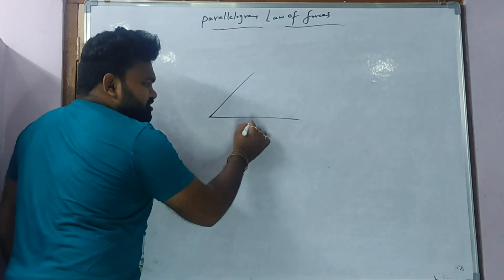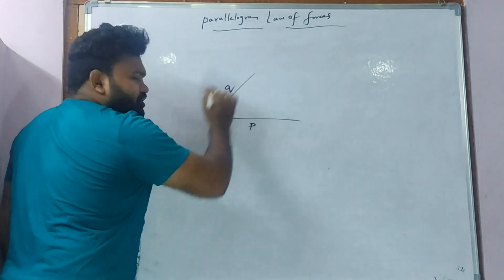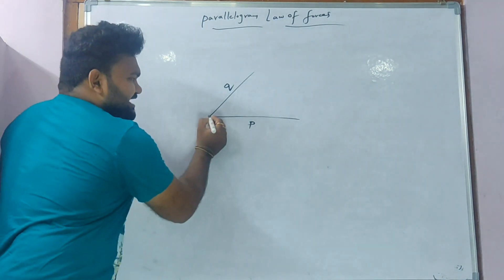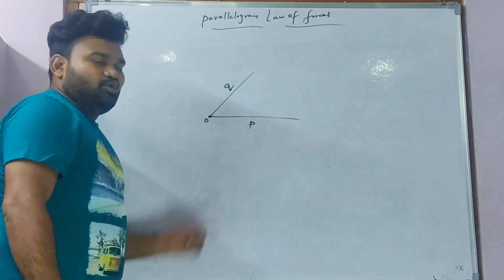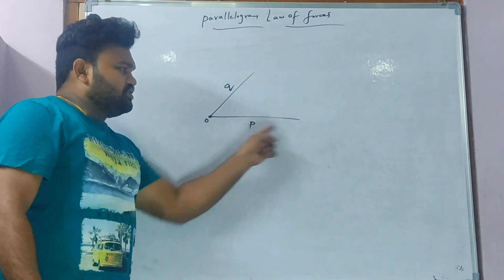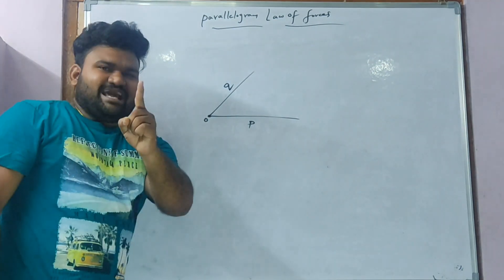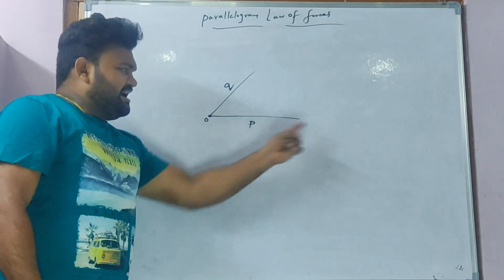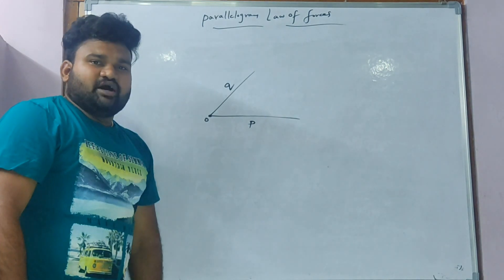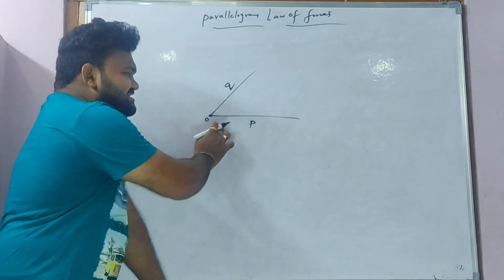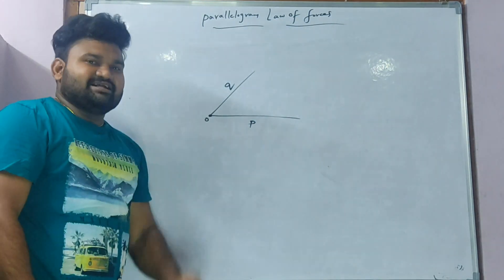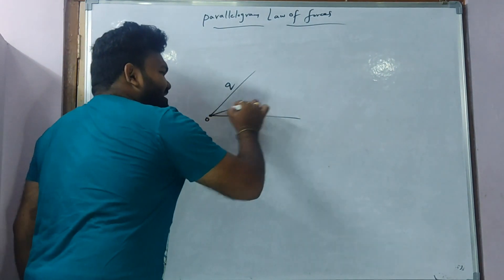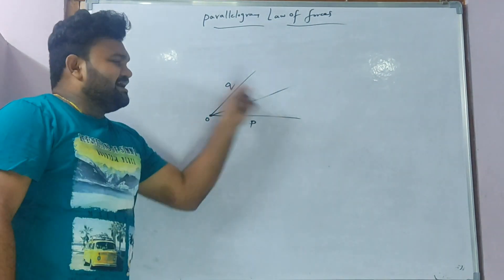If you call the forces P and Q, these two adjacent sides start from the same point O. Forces P and Q both start from the same point O. These two are the adjacent sides, not different sides. So, if you call the diagonal, you are calling the two sides — this is the diagonal.